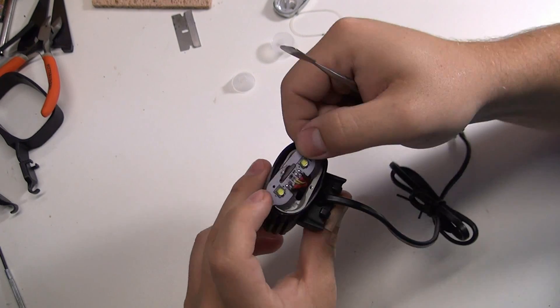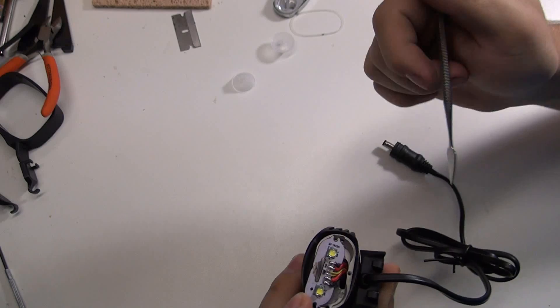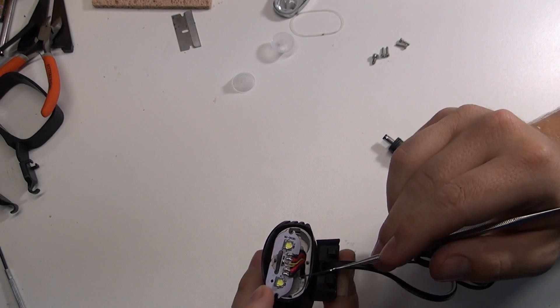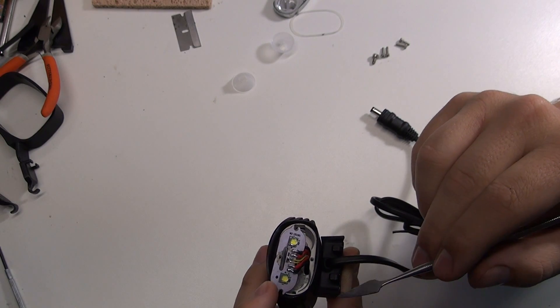Pretty sparse LED board. I mean, you've got a resistor there. And then you have the two Cree XML LEDs.